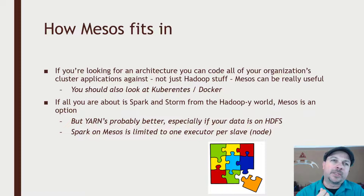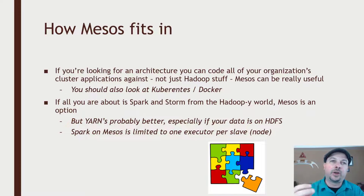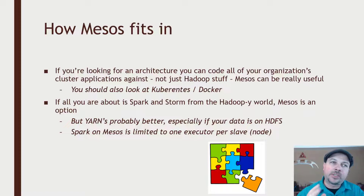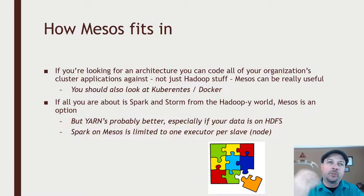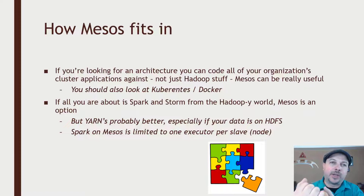If all you care about is Spark and Storm out of the Hadoop world, Mesos is an option because Spark and Storm can run on Mesos instead of Yarn — you don't need Hadoop necessarily to run Spark and Storm. But Yarn is probably still the better choice, especially if your data is stored on an HDFS cluster, because Yarn will make sure that you have data locality between your Spark processes and the data distributed on Yarn. It tries to ensure the computing task processing your data is on the same node as the data itself, which can be a very important optimization.